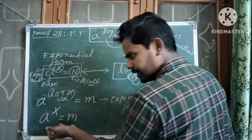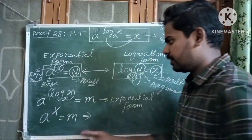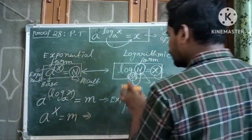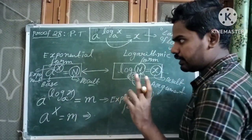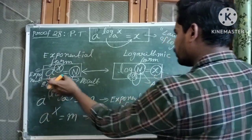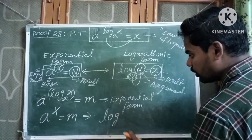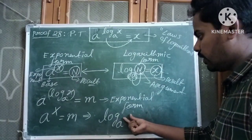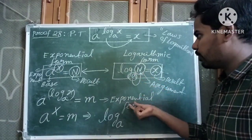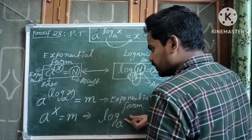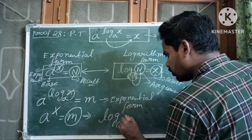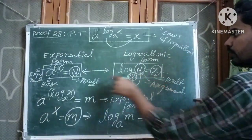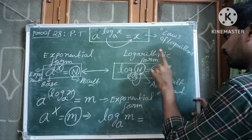So a to the power capital X equals m is exponential form. Let us convert it into logarithmic form. The base of the exponential form is a, so the base of the logarithmic form is also a. The argument of the logarithmic form is the result of the exponential form, which is m. So we write log m to the base a.